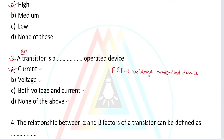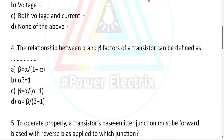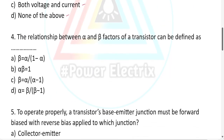For a BJT, it is a current controlled device or current operated device. For a FET transistor, it is a voltage operated device or voltage control device, because the output is controlled by the input voltage.